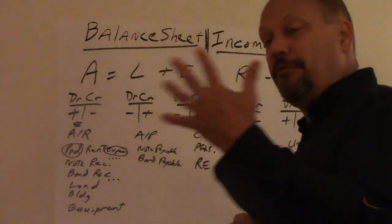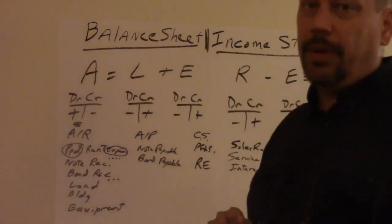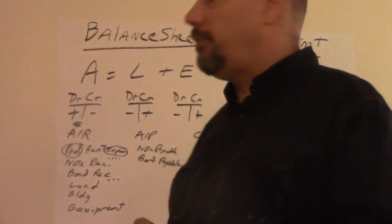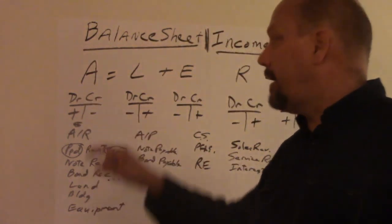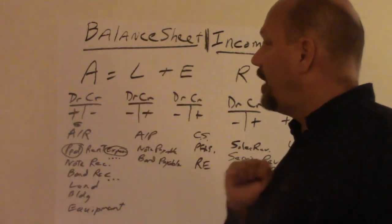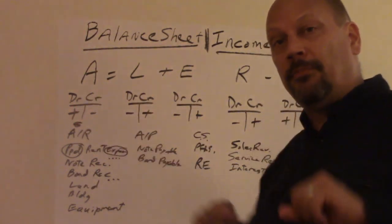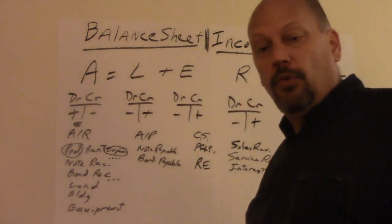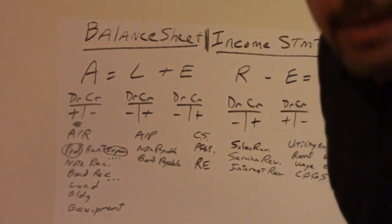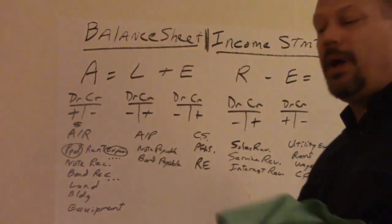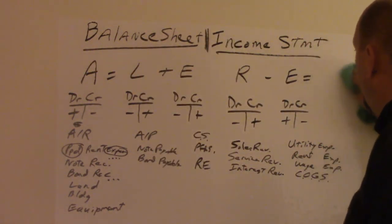The five categories of accounts are assets, liabilities, equity on the balance sheet and revenue and expense on the income statement. So your five accounts are asset, liability, equity, revenue, and expense. Yes, there's two E's. If it's balance sheet E, it's equity. Income statement E is expense. Then we put what's called a T-account because it looks just like a T.